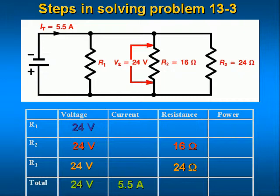Just as before, we put what we know into the table first. We have enough information to calculate the currents in R2 and R3. I2 equals 24 volts divided by 16 ohms equals 1.5 amps. Then I3 equals 24 volts divided by 24 ohms equals 1 amp. We don't know the current through R1, but Kirchhoff's current law says the sum of all the branch currents must equal the total current. So I1 equals 5.5 minus 1.5 minus 1 equals 3 amps.